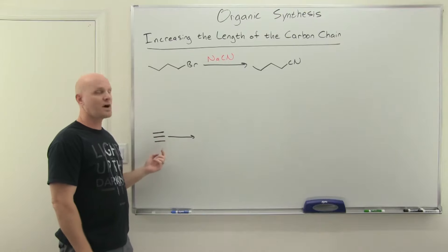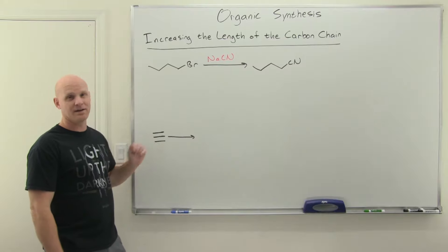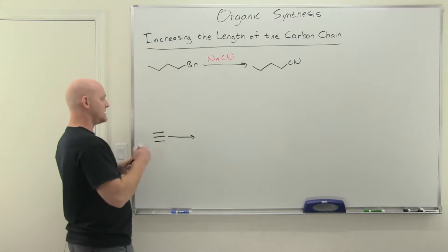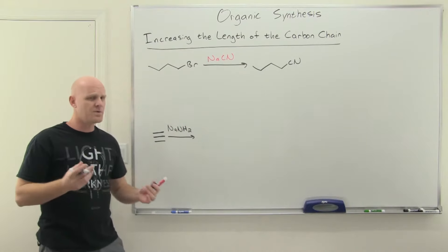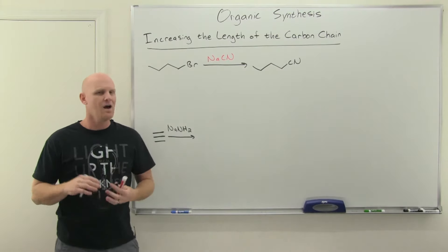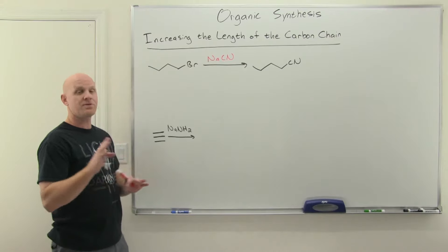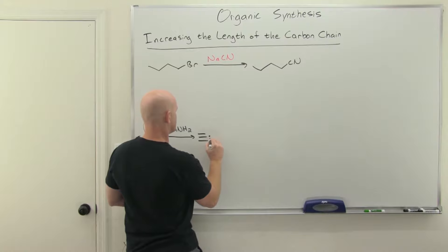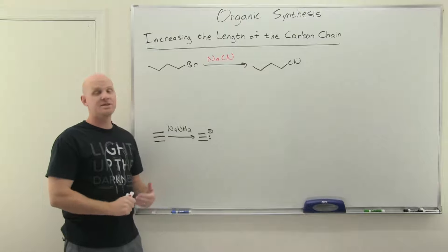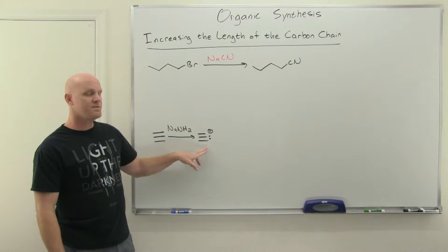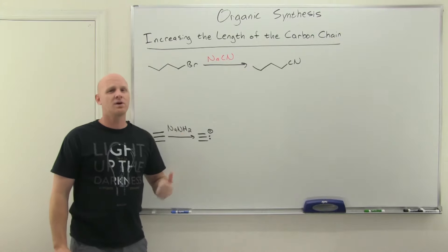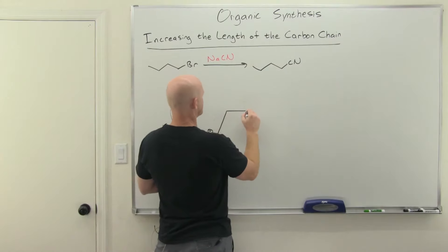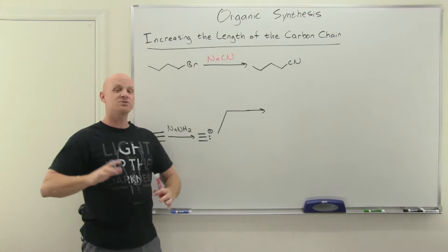If you want to actually increase the length of your carbon chain in a variety of ways, you want to start with a terminal alkyne. I'll start with acetylene here. Those SP-hybridized carbons bonded to a hydrogen can be deprotonated with NaNH2. Some of you may also learn that a Grignard reagent can deprotonate a terminal alkyne, but we'll learn about those in the next chapter. For most of us, sodium amide (NaNH2) is used to deprotonate the terminal alkyne, forming a lovely acetylide ion that is a strong nucleophile.